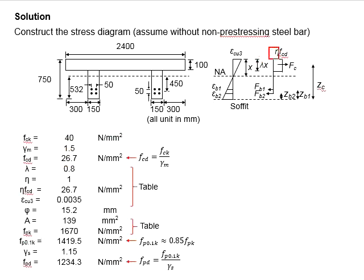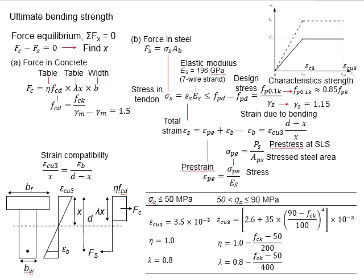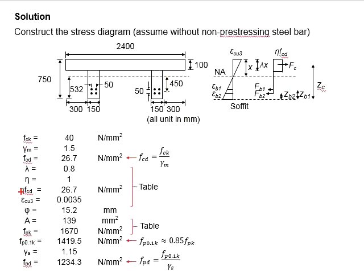Next, you need to determine the eta and lambda. The eta and lambda are 1.0 and 0.8 respectively. You are also able to determine the epsilon Cu3, which will be required later to determine the strength in the steel tendon. Therefore, eta times Fcd will be equal to 26.7.